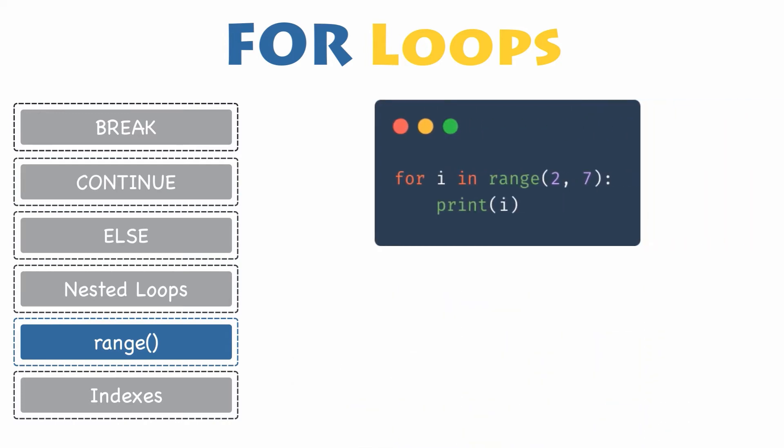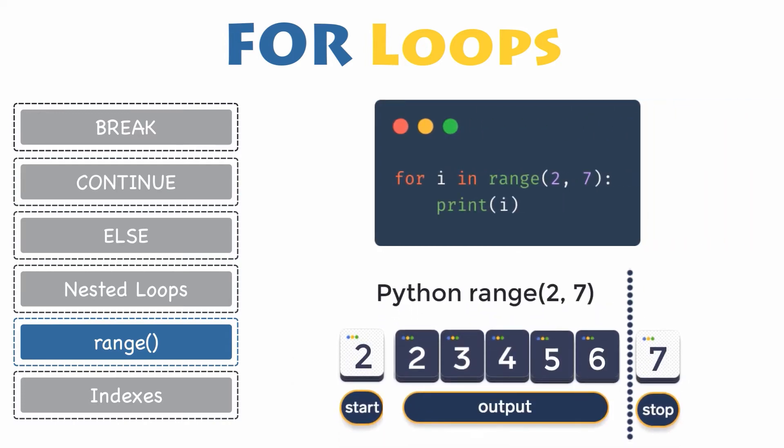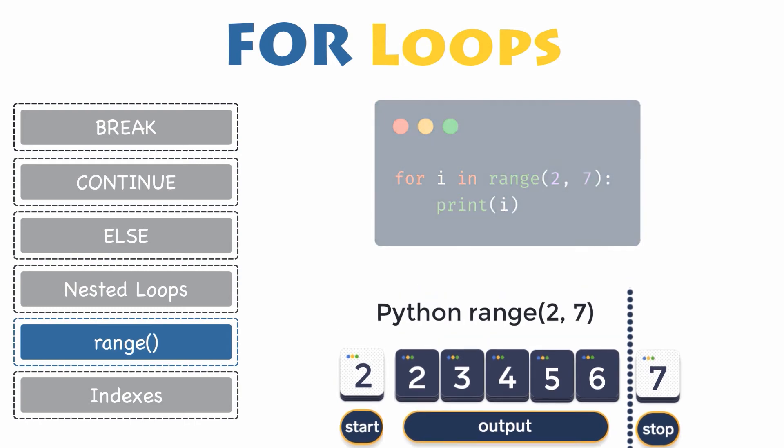As you may have noticed, the range function starts from 0 by default. But you can start the range at another number by specifying the start parameter. For instance, for i in range(2, 7), print i. This will result in printing out numbers from 2 through 6 included.